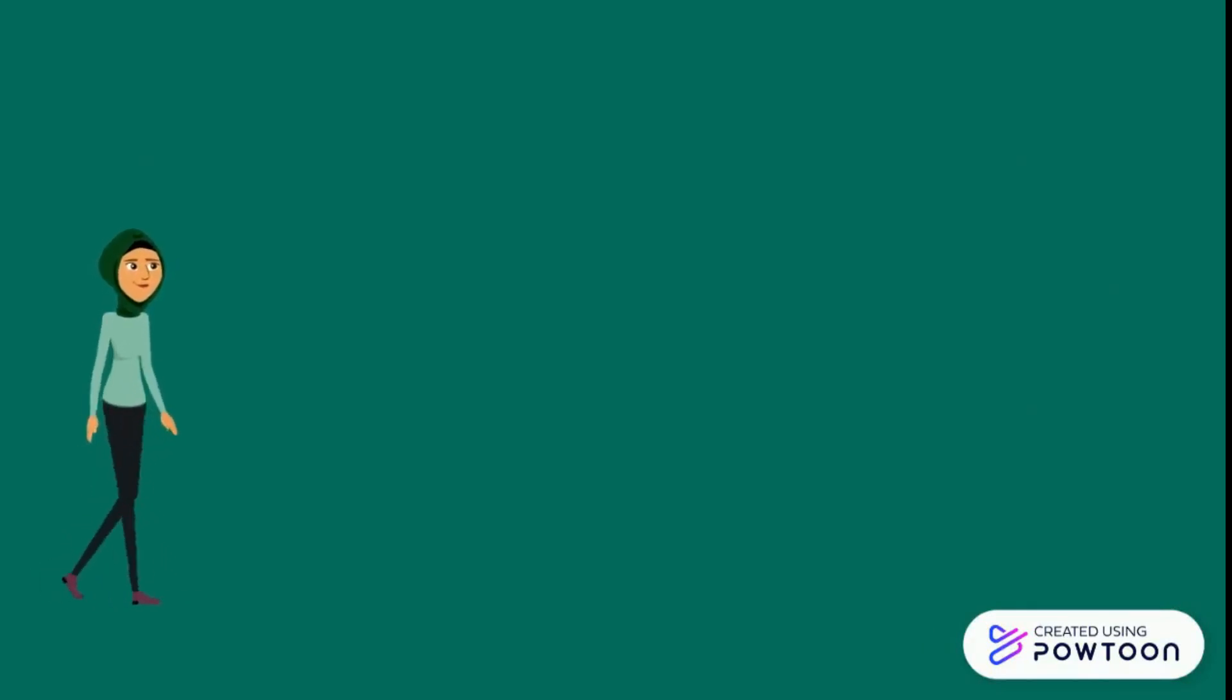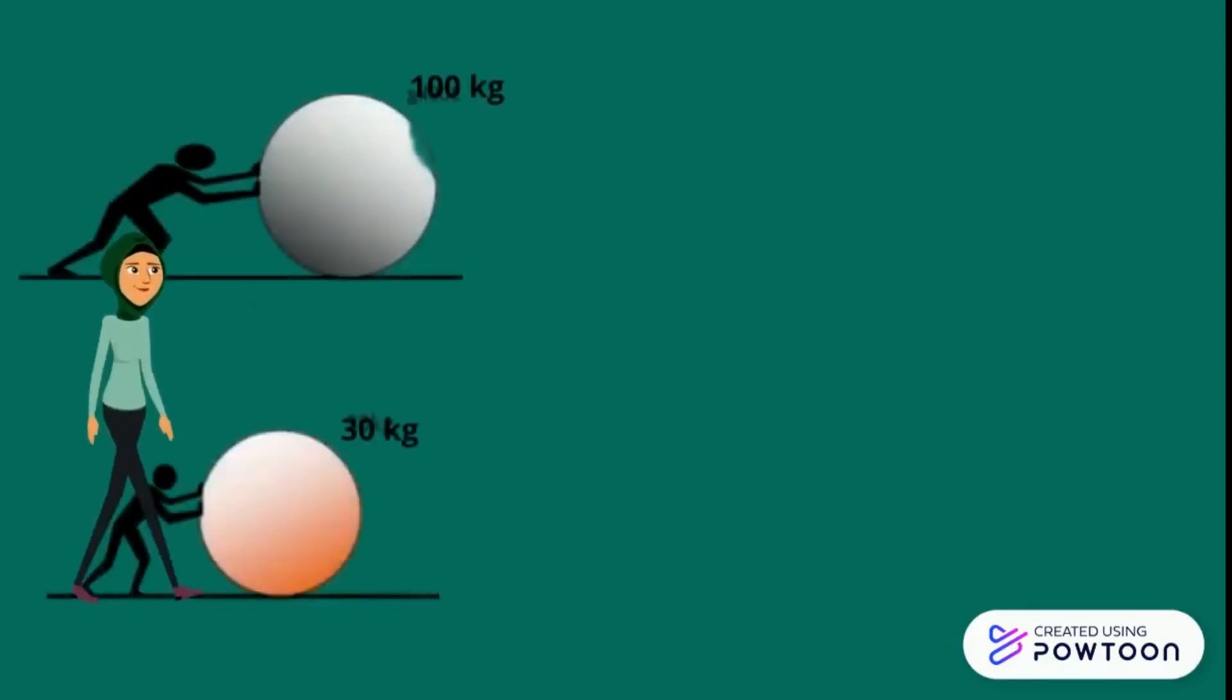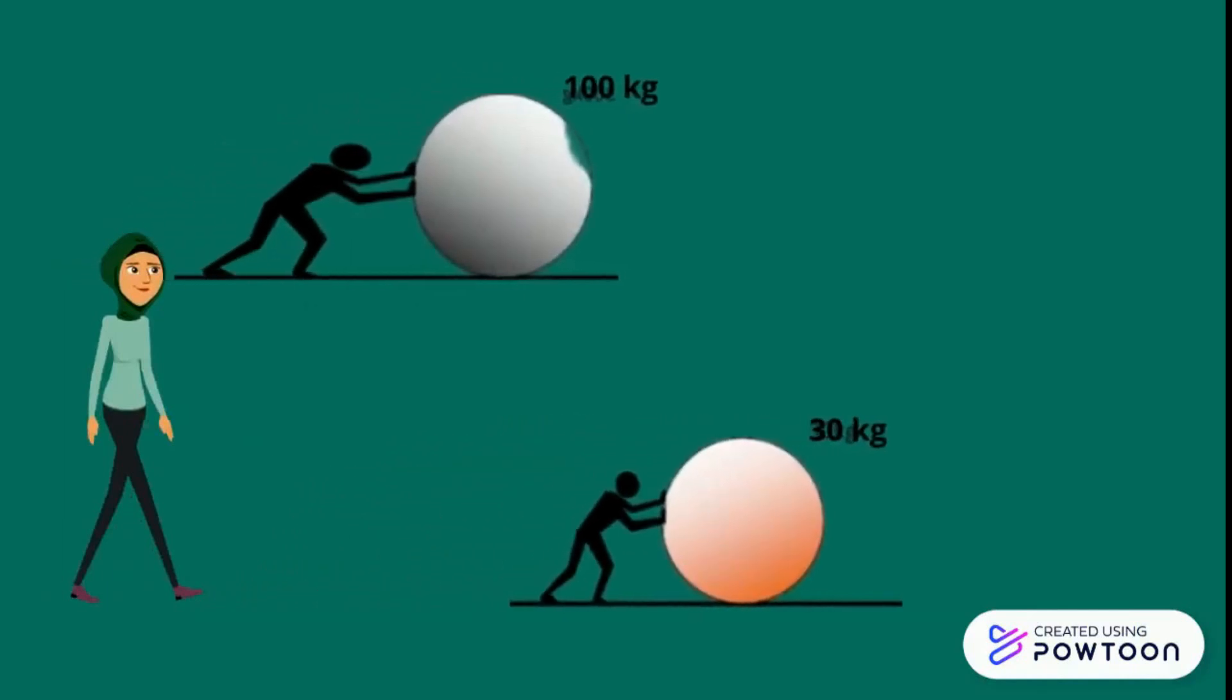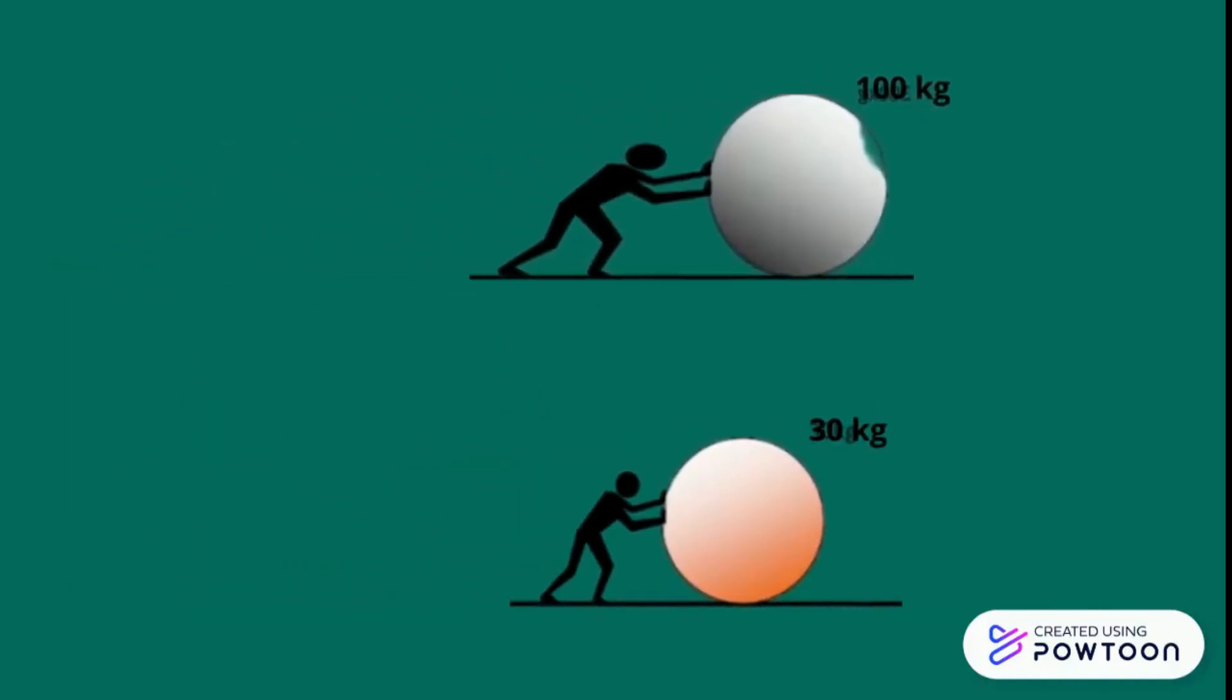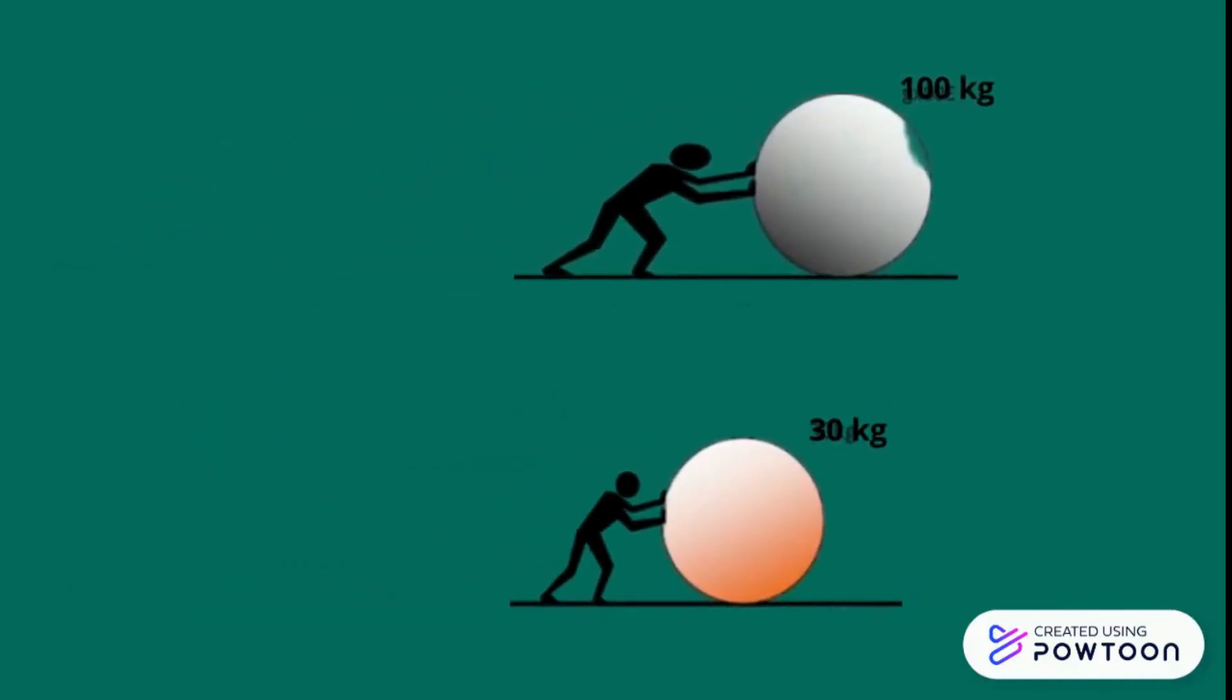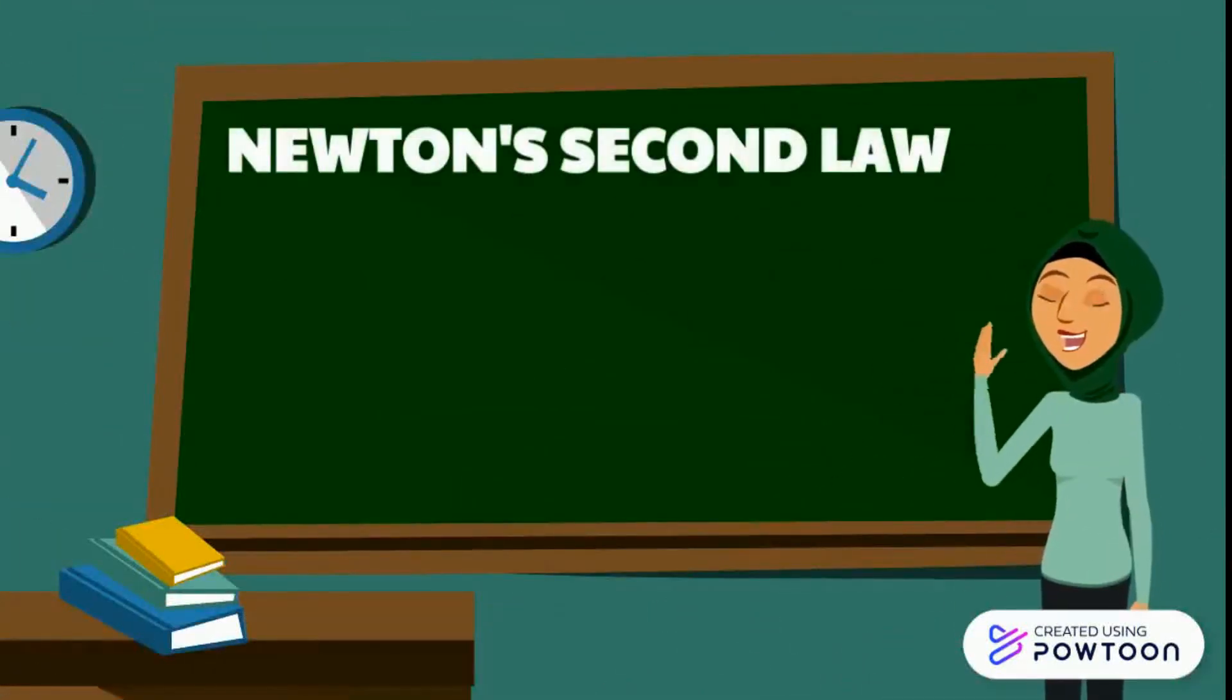Let's say you have two balls of different masses. The heavier ball is going to be harder to move and to stop once it starts moving. And this idea connects nicely to Newton's second law.